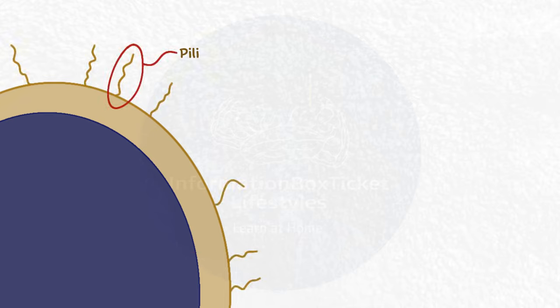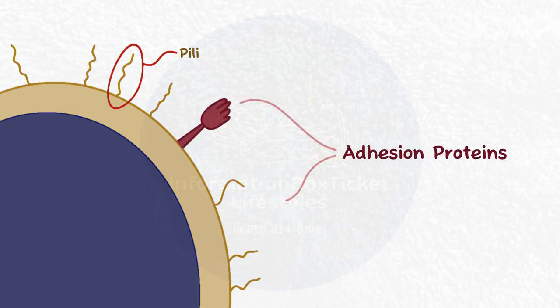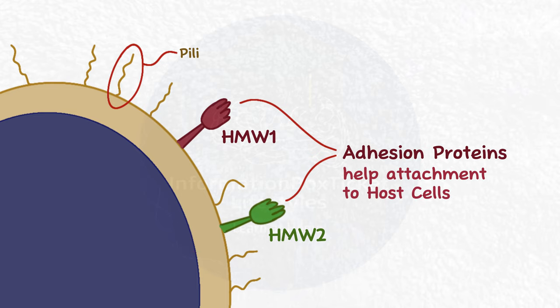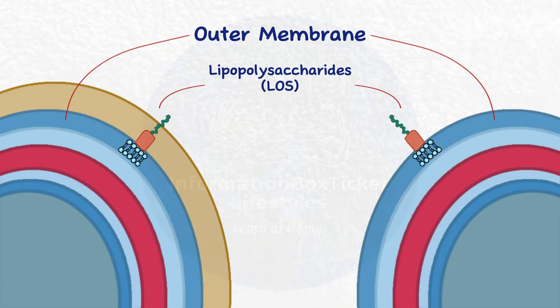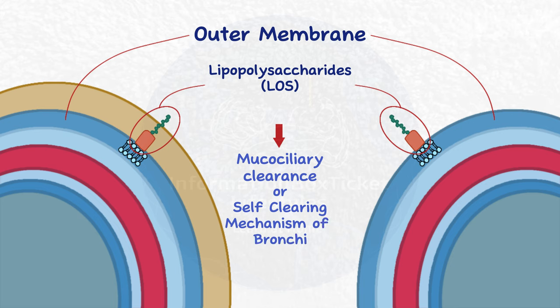The capsule also contains pili, which are hair-like extensions, as well as adhesion proteins such as HMW1 and HMW2, which aid in the bacteria's attachment to host cells. Both encapsulated and unencapsulated strains contain an outer membrane composed of lipooligosaccharides, or LOS. LOS decreases mucociliary clearance — the bronchi's self-clearing process — which ordinarily removes microorganisms from the respiratory system, allowing Haemophilus influenzae to colonize the respiratory tract.